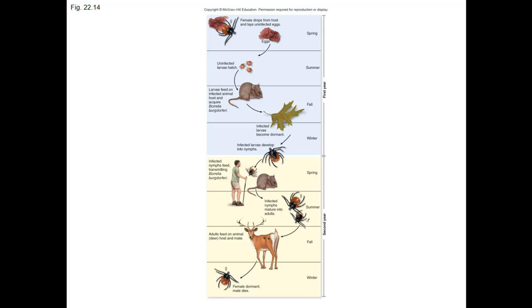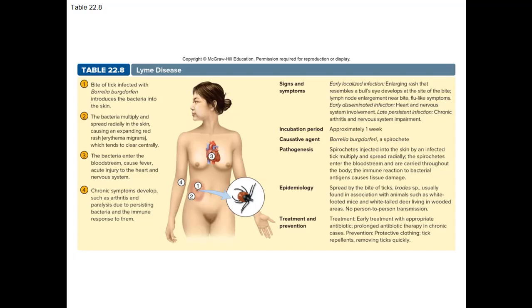Prevention: avoid tick bites, have tick repellent material added onto your clothing. Early treatment is with doxycycline. Later cases require intravenous ampicillin or ceftriaxone. Lyme disease gets its name from Old Lyme, Connecticut, where there was a massive outbreak or cluster of cases of arthritis. They eventually tracked it down to the ticks out there. If you go to Old Lyme, Connecticut now, there will be signs discouraging people from walking in high-tick areas.